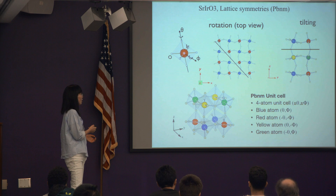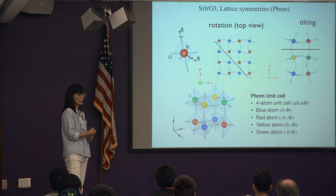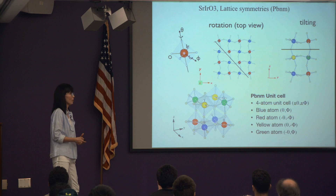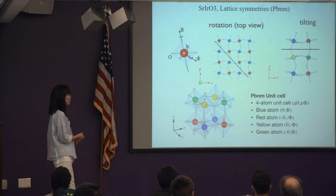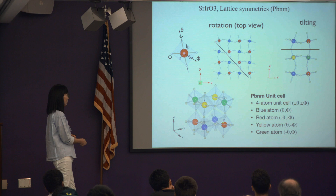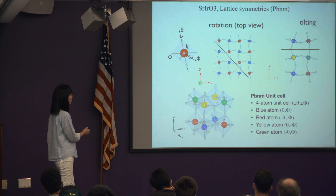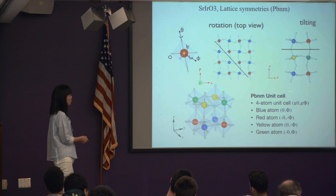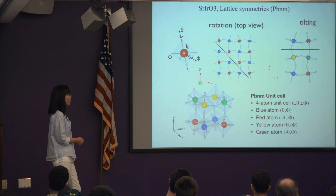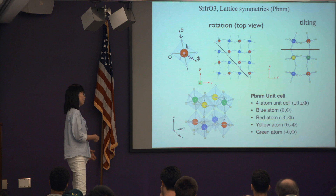Now let's get to SrIrO₃. The lattice symmetry is space group Pbnm. It has more than one glide: a B-glide, an N-glide, and a mirror. The top view is the same as shown earlier — a 2D system with just B-glide — but in 3D it looks like this. The unit cell has four iridium atoms (red, blue, yellow, green) with different staggered tilting and rotation. Theta is rotation around the z-axis, phi is tilting away from the AB plane. This is one of the most common orthorhombic space groups seen in nature.